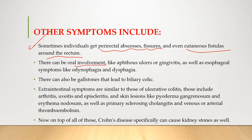There can be oral involvement like aphthous ulcers — a non-specific term referring to ulcers of the mouth. These ulcers are caused by inflammation linked to Crohn's disease as well as vitamin and mineral deficiencies due to malabsorption. It may also lead to gingivitis and esophageal symptoms like odynophagia (pain during swallowing) and dysphagia (difficulty in swallowing).